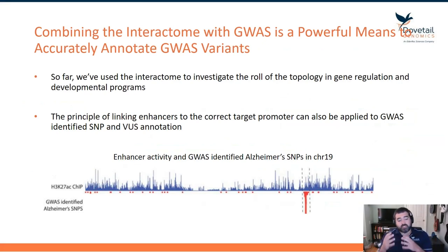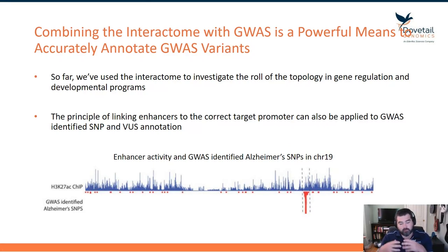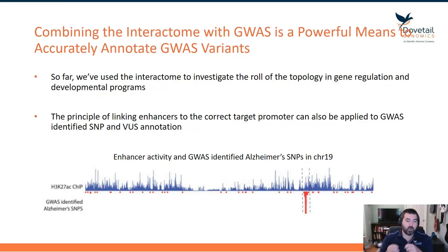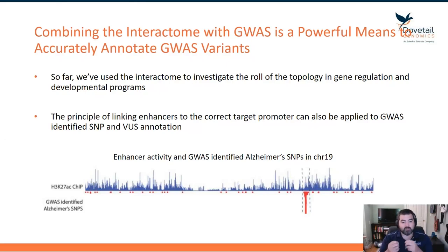What we've just done with that Hi-CHIP data is annotate what enhancer is engaged with what promoter. Now, if you have a bunch of GWAS information and variants known to be linked to disease but you don't know exactly what they're doing — this interactome data type is very powerful to help annotate those GWAS variants.